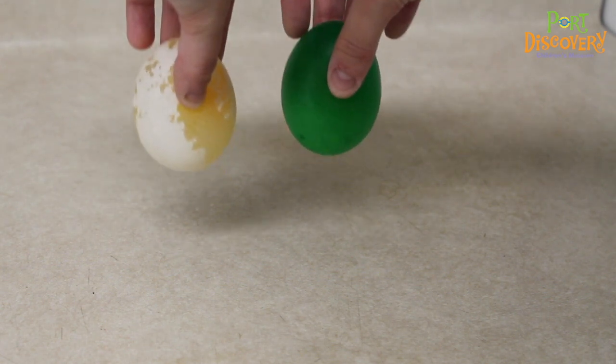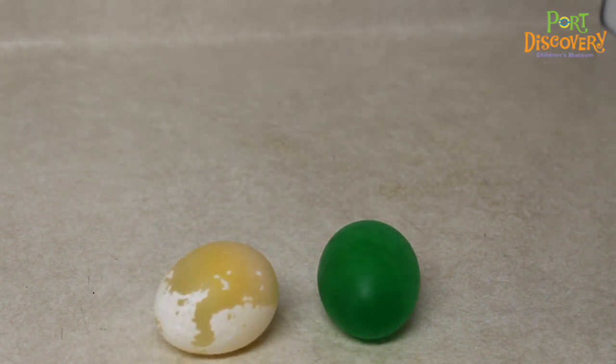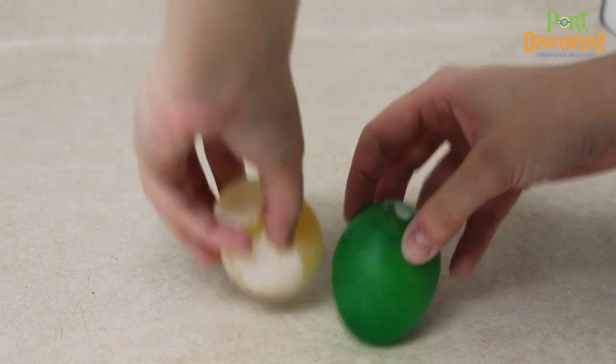Once you've managed to get most of the eggshell off, try the experiment for yourself. Hold your egg one to three inches above a table or countertop, drop, and watch it bounce.